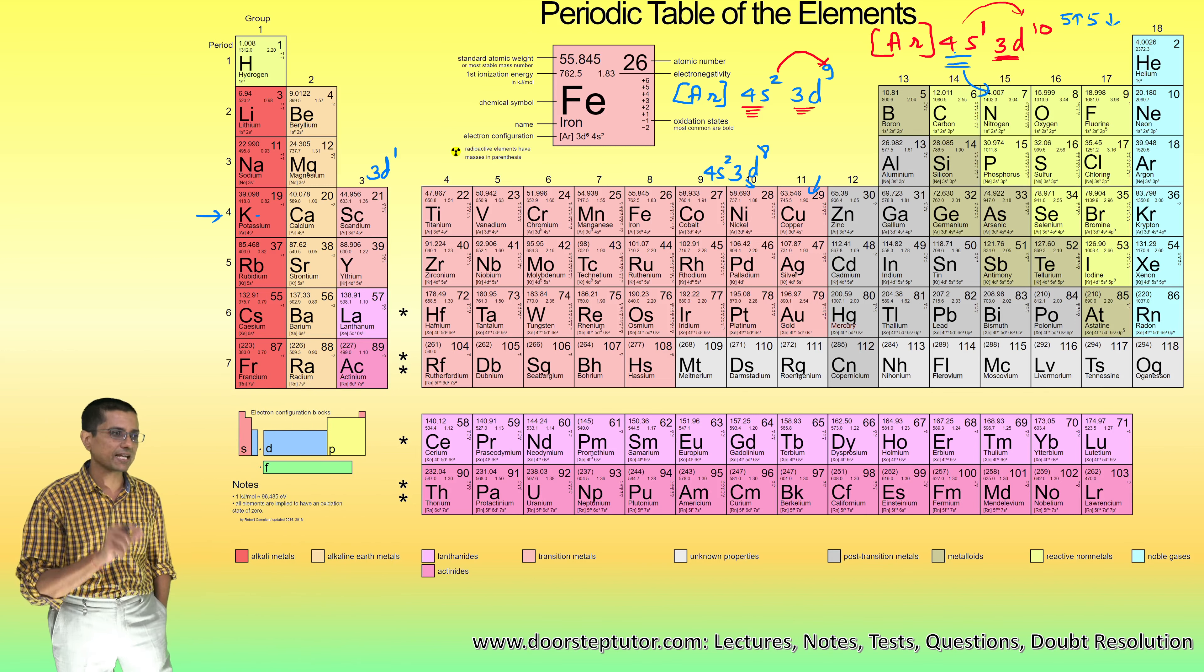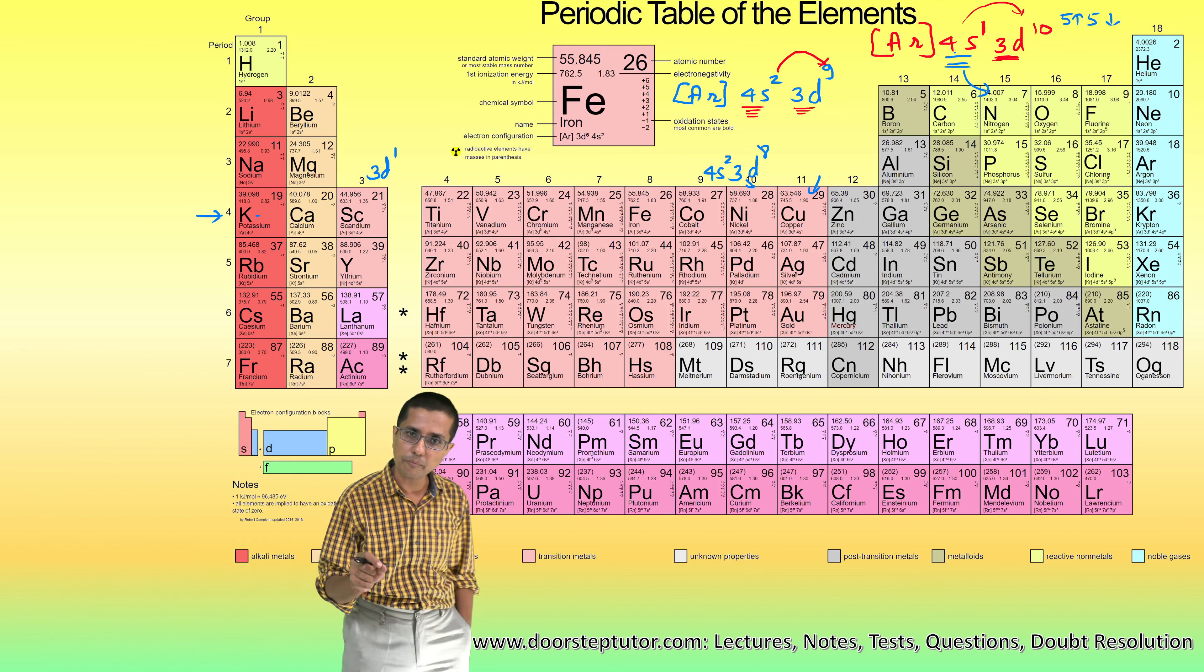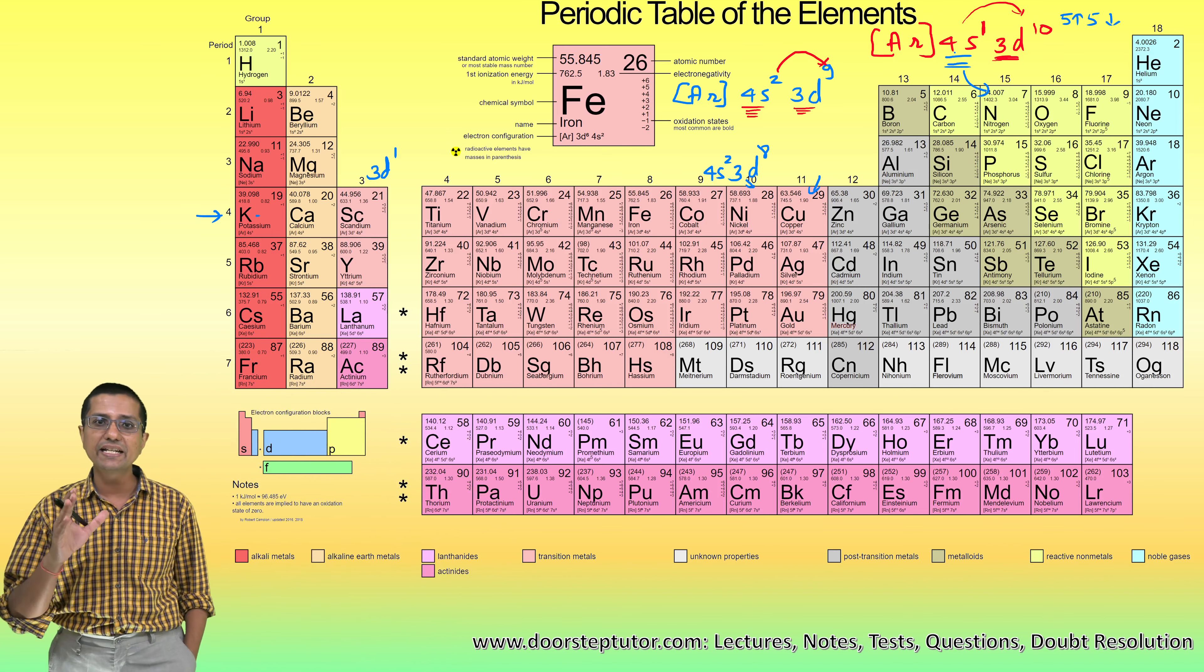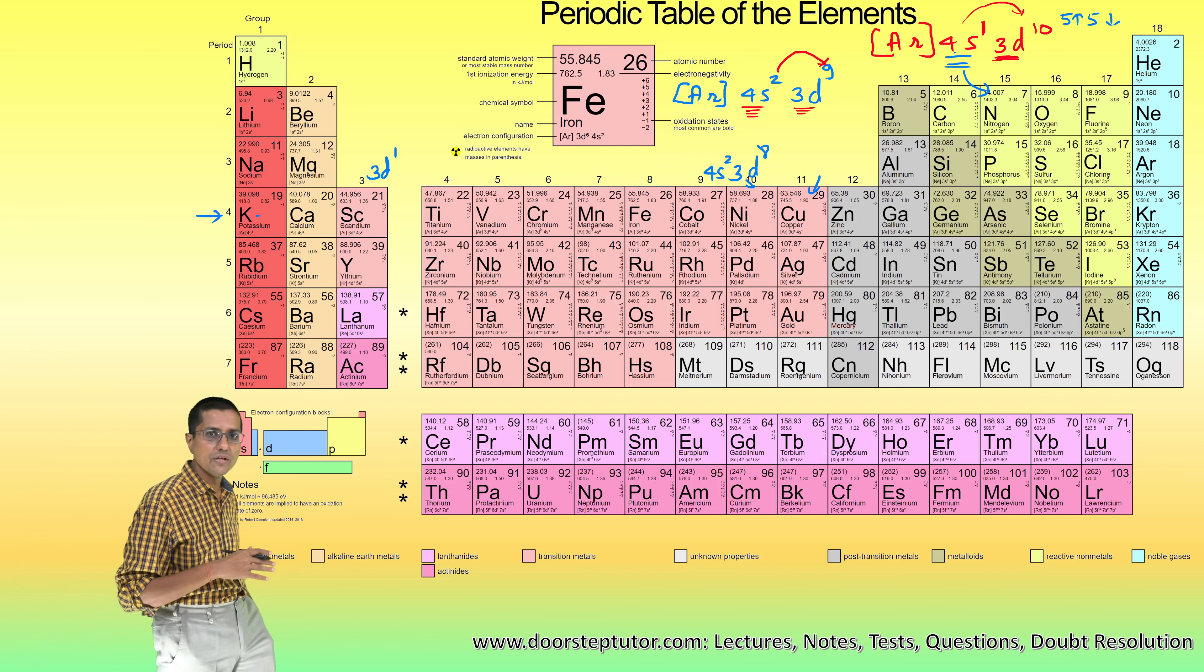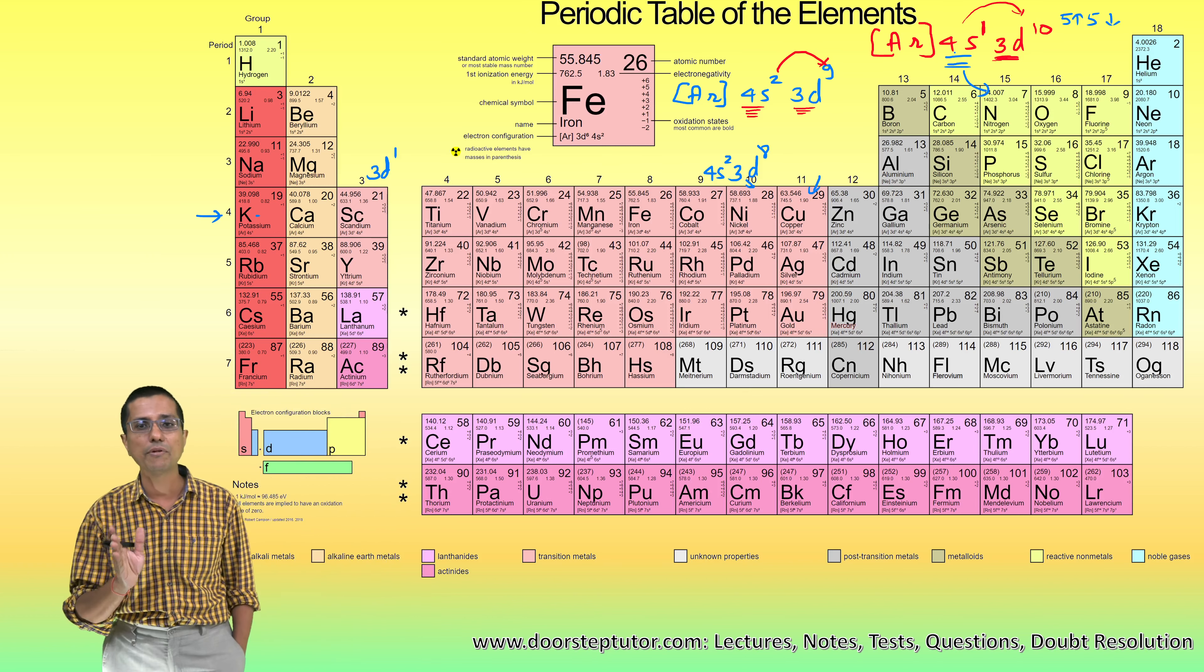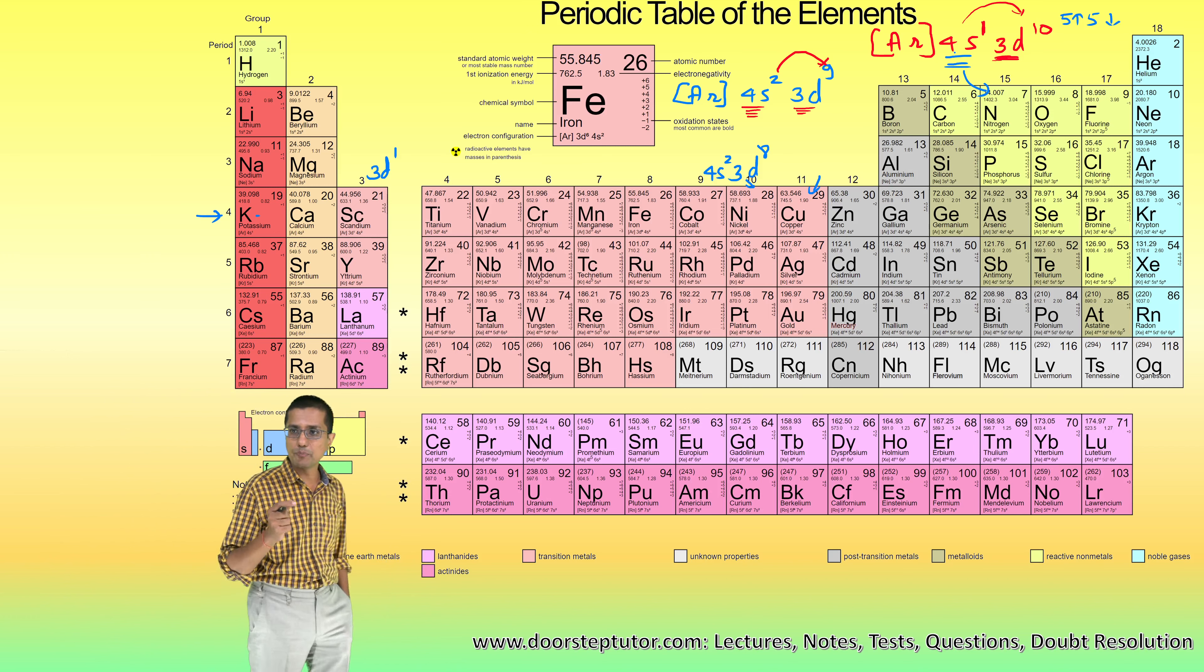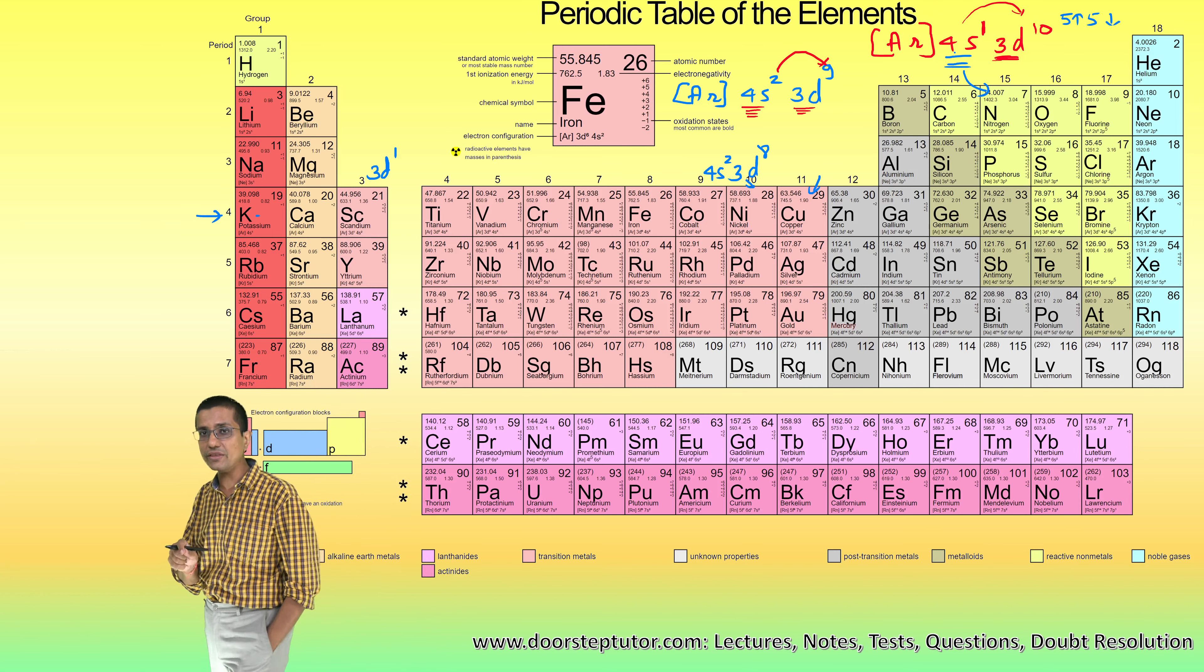That is a very common valency for copper—the most common is Cu⁺. The next common is that it loses that extra 3d electron also, so it becomes argon 3d⁹ and forms the Cu²⁺ ion. The 2+ ion is also a very common valency for copper. So what are the common valencies? Cu⁺ and Cu²⁺—cuprous and cupric, respectively.